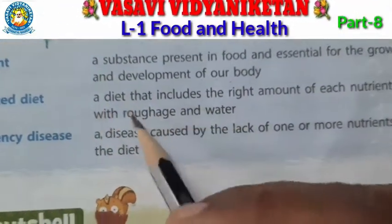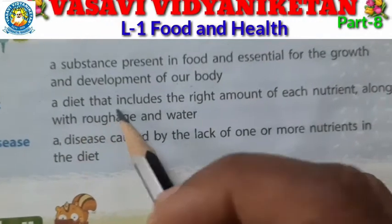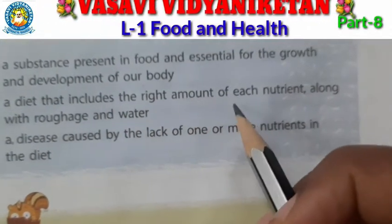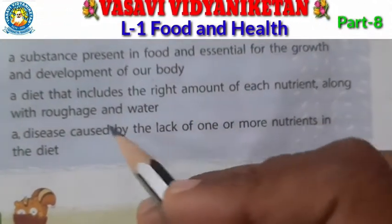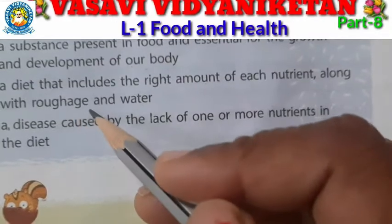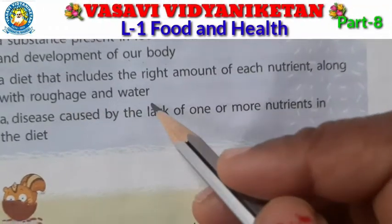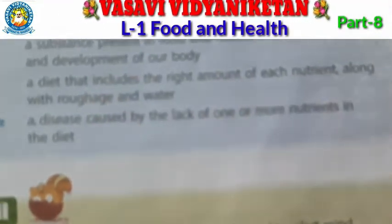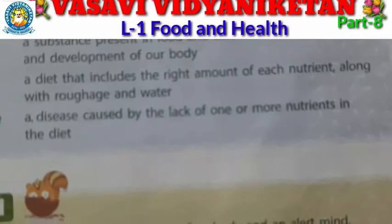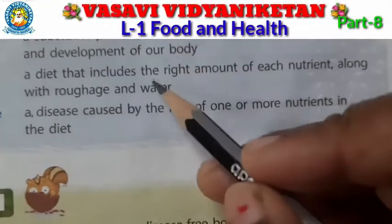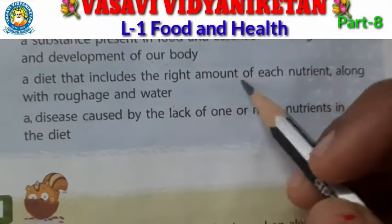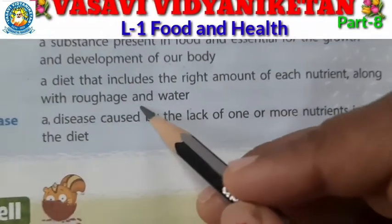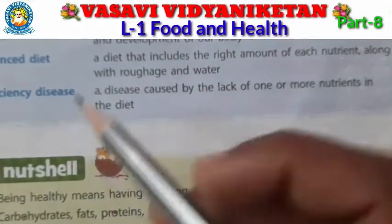Balanced diet: a diet that includes the right amount of each nutrient along with roughage and water.